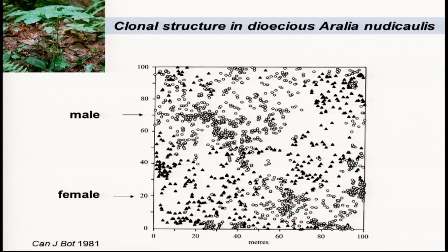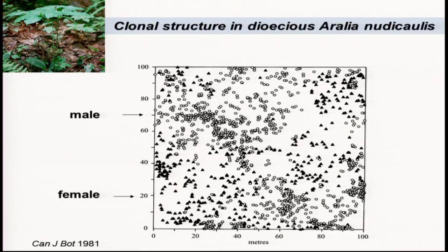This is the one-hectare map — it took a long time and a lot of undergraduate help. And it was a bust, basically, because what we were hoping to show was that female ramets embedded in the middle of a clone would do far less well than ramets next to male ramets. We found no effect. It was quite obvious when we finished why — this species is pollinated by bumblebees, and bumblebees fly reasonable distances, so there really wasn't a constraint on pollen dispersal.